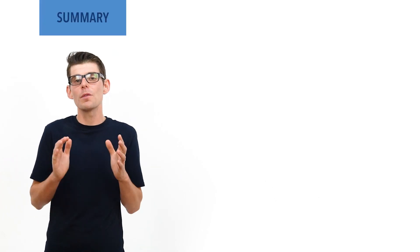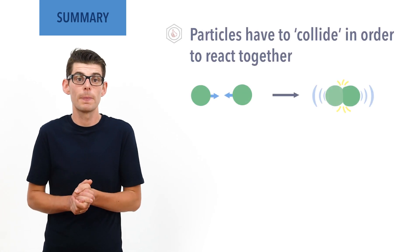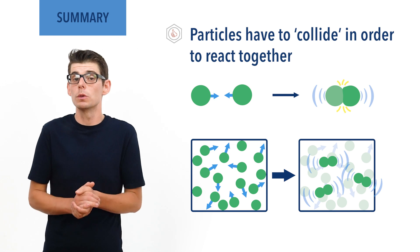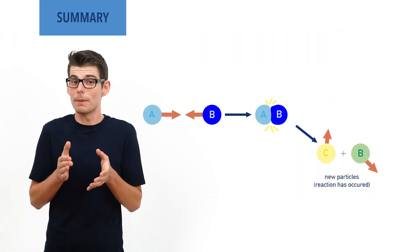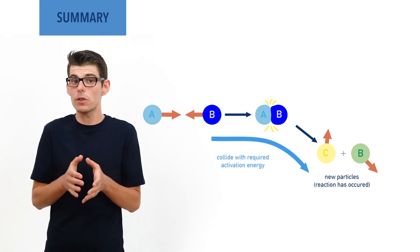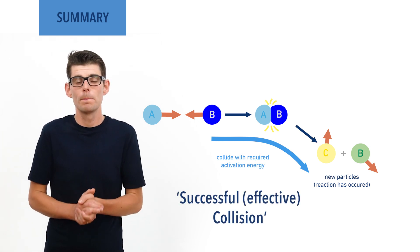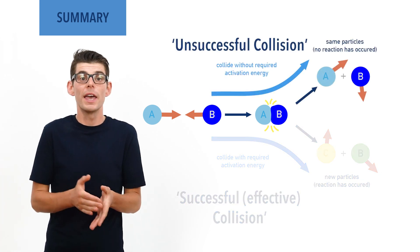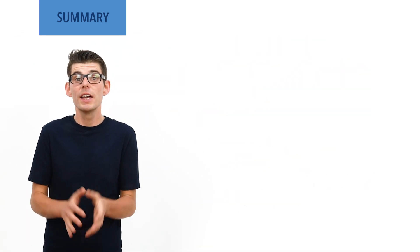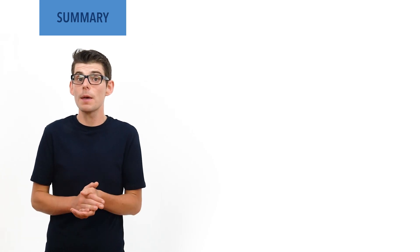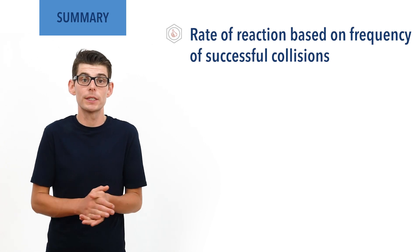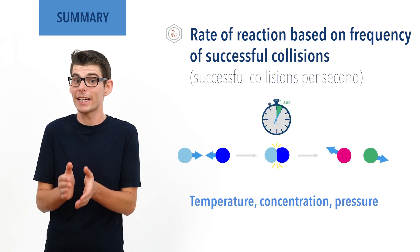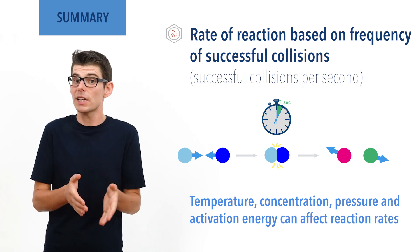To summarize: for a reaction to start, reactant particles have to collide. In a gas system, particles are constantly moving and colliding with each other, exchanging energy. Only particles that collide with enough energy can react together. This amount of energy is called the activation energy, and these collisions are called successful or effective collisions. Most collisions between particles don't involve the required activation energy and are described as unsuccessful or ineffective collisions. How quickly successful collisions occur determines the rate of reaction, and a rate can be described in terms of the frequency of successful collisions between reactant molecules — how many successful collisions there are per second. Temperature, concentration, pressure, and activation energy all have an impact on the frequency of successful collisions in a gas system.